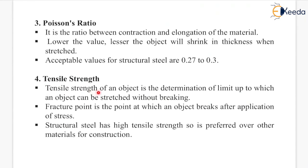Next is tensile strength. Tensile strength of an object is the determination of the limit up to which an object can be stretched without breaking. The fracture point is the point at which an object breaks after application of stress. Structural steel has high tensile strength, so it is preferred over other materials for construction.